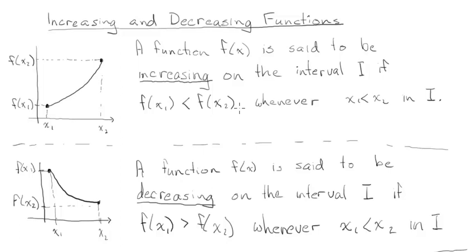All it's saying is that if x1 is less than x2 — meaning you move from left to right — then f(x1) is less than f(x2). That just means the y-value for the point on the right is bigger than the one on the left. So as you go from left to right, the y-values are going up. That's an interval of increase. For an interval of decrease it's just the opposite.